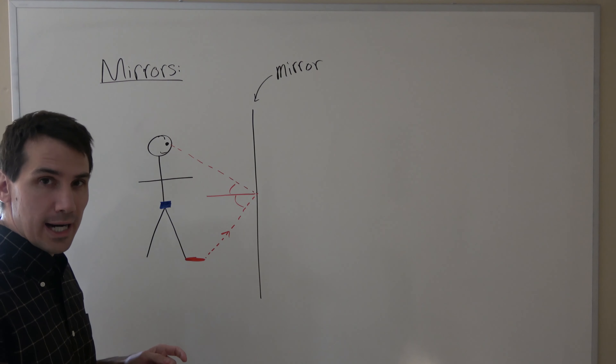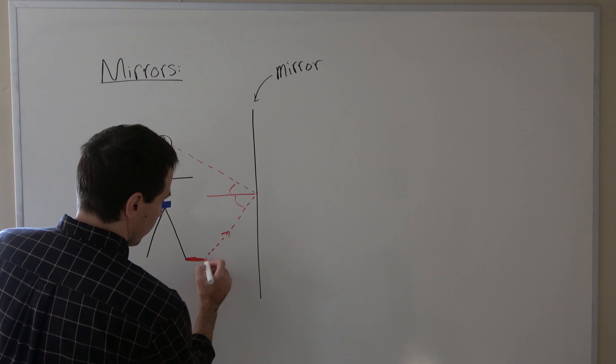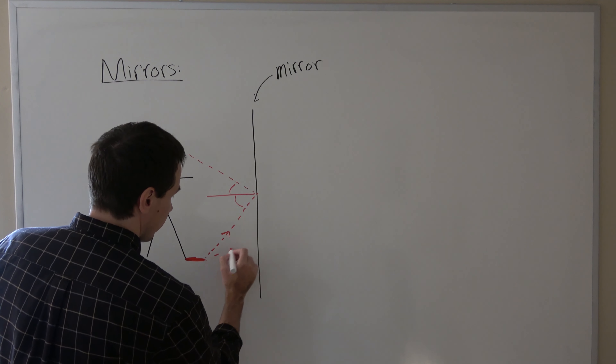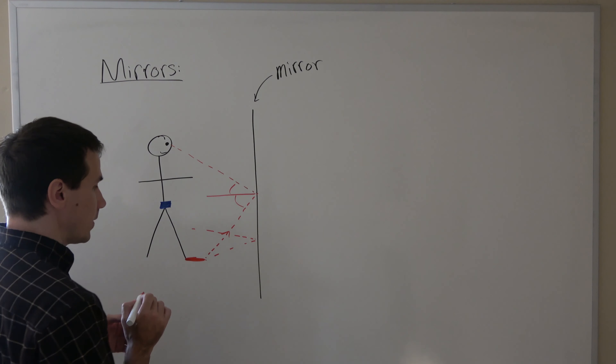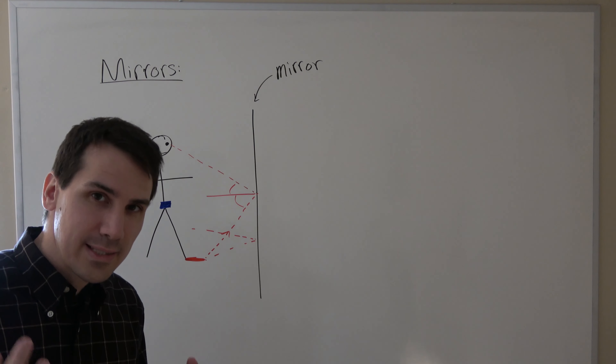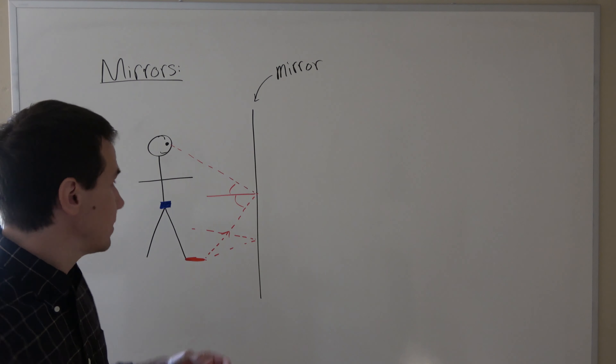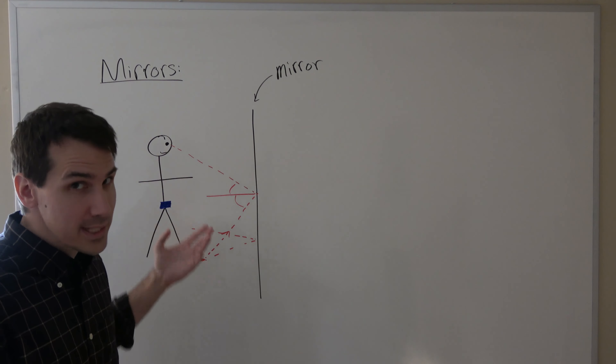Your red shoes can be seen in every direction, which means that light is being transmitted from your red shoes in every direction. So there's also light that comes off your red shoe, bounces off the mirror, and goes off somewhere else. You just can't see that light because it's not hitting your eyes — you only see light that hits your eyes.